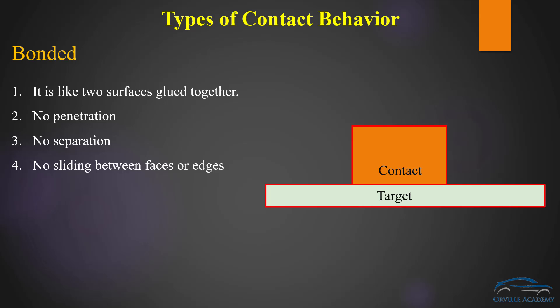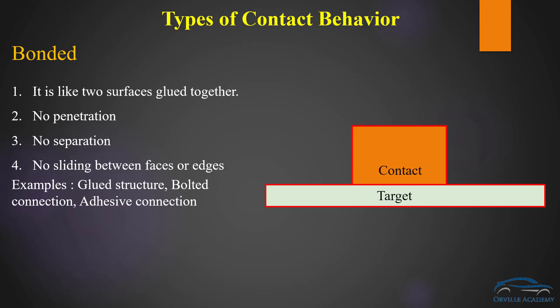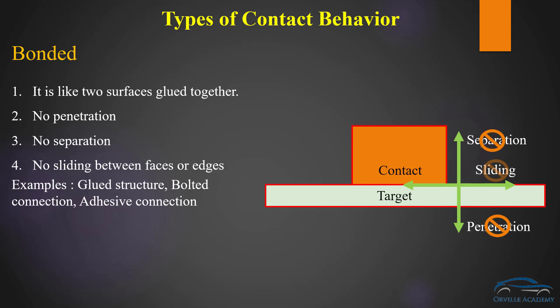There is also no sliding between the faces or edges. Typical examples where we can use bonded contact are glued structures, bolted connections, and adhesive connections. In terms of separation, in case of bonded contact the contact surface cannot separate from the target surface causing the contact to open. Penetration essentially indicates the contact surface moving into the target surface — this is also not allowed. And there is no sliding allowed between the contact and target surface. Keep these three factors in mind: separation, penetration, and sliding.